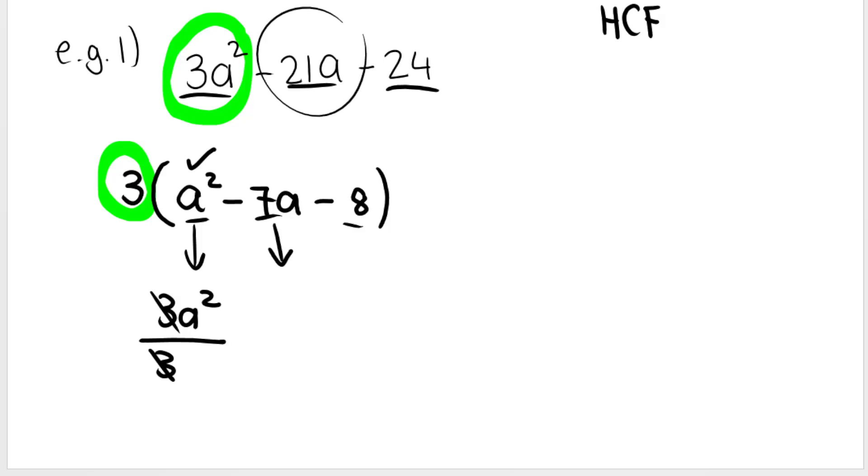That's how I get this one. Or this one, you take the second term, negative 21a, and you divide it by your HCF, divided by 3. Negative 21 divided by 3 is negative 7, and the a needs to stay there. That's where I get this from. And then negative 24 divided by 3 is negative 8. So it just depends on how you like to think about it.